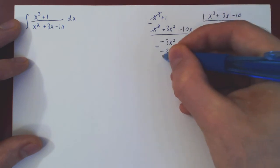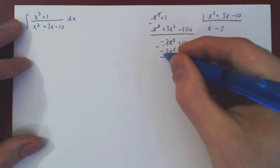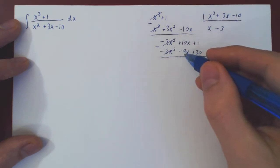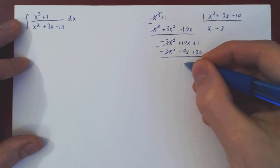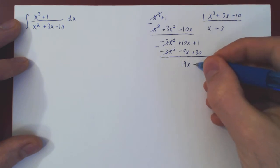We subtract. Negative 3x squared minus itself cancels. 10x minus negative 9x gives you 19x. 1 minus 30, negative 29.